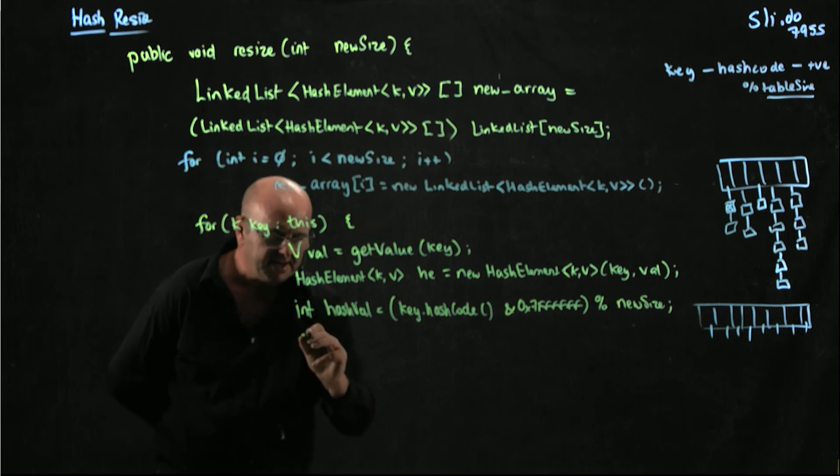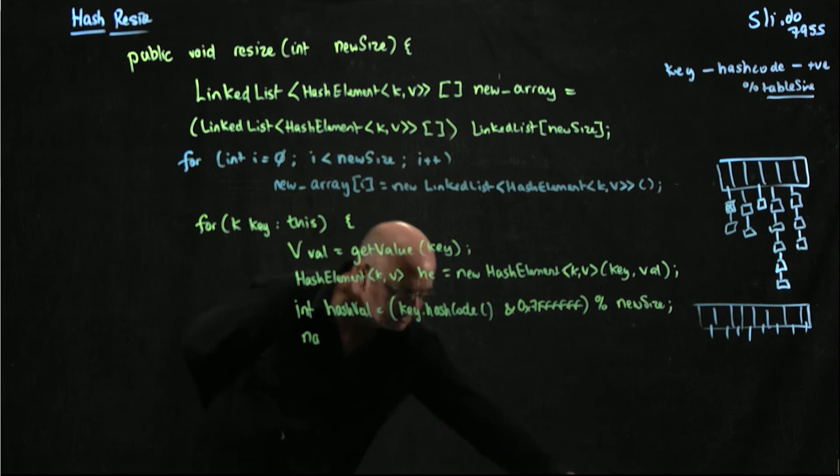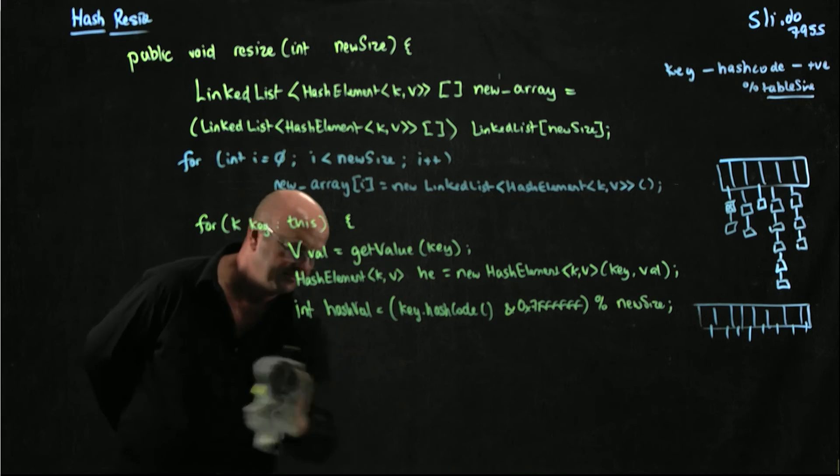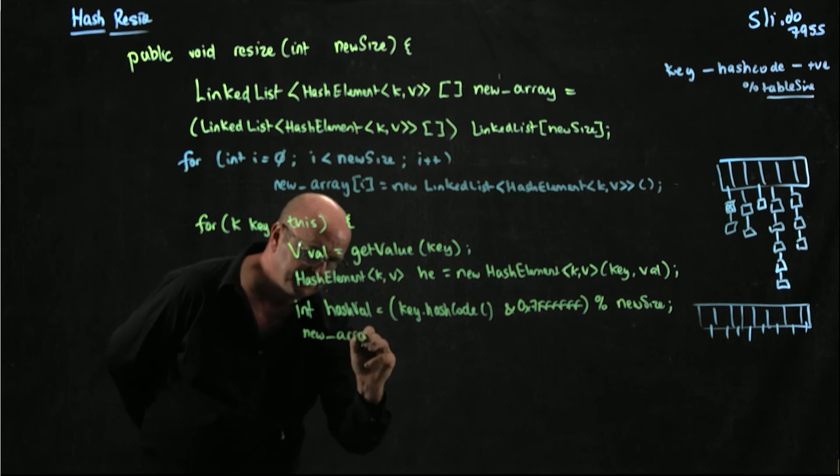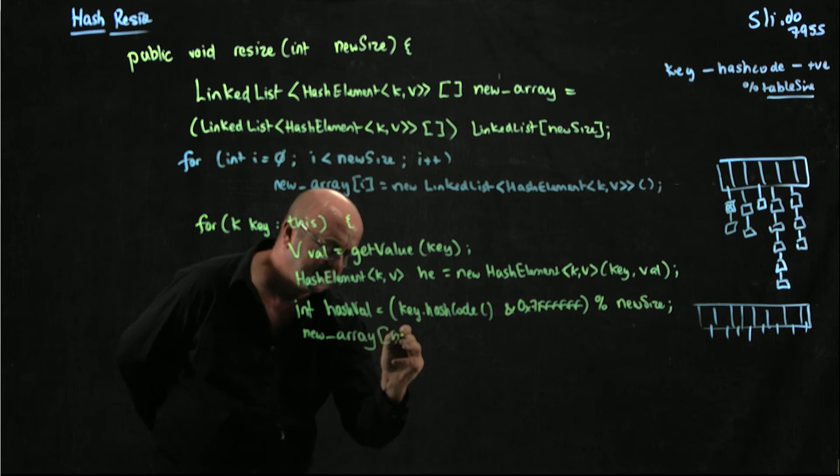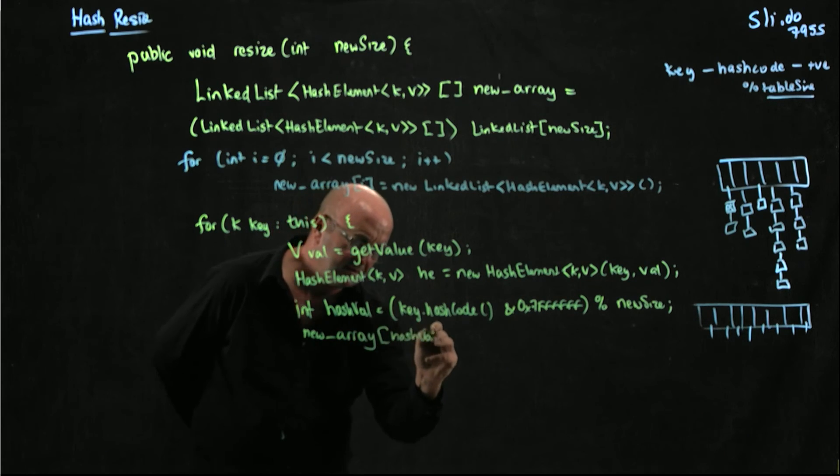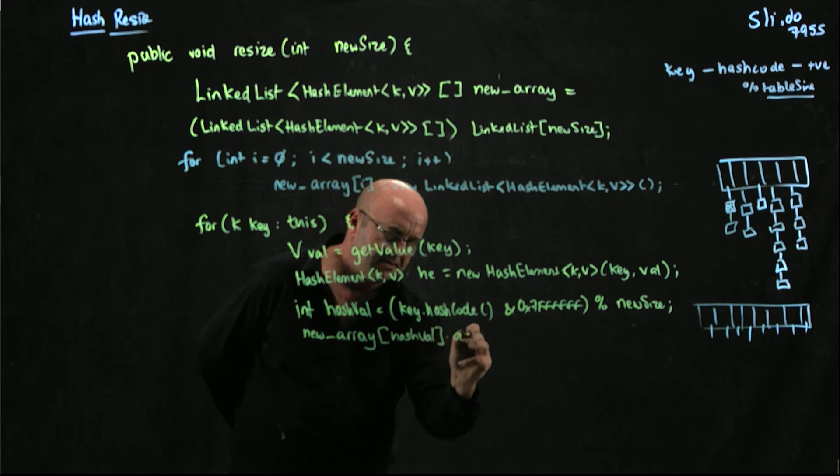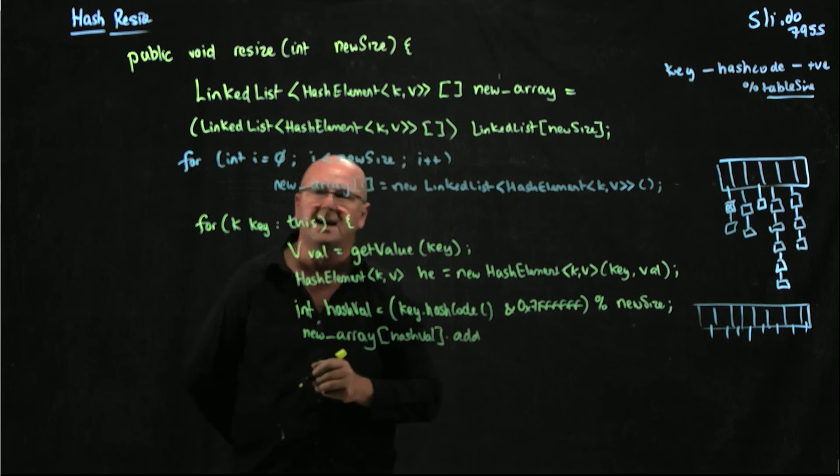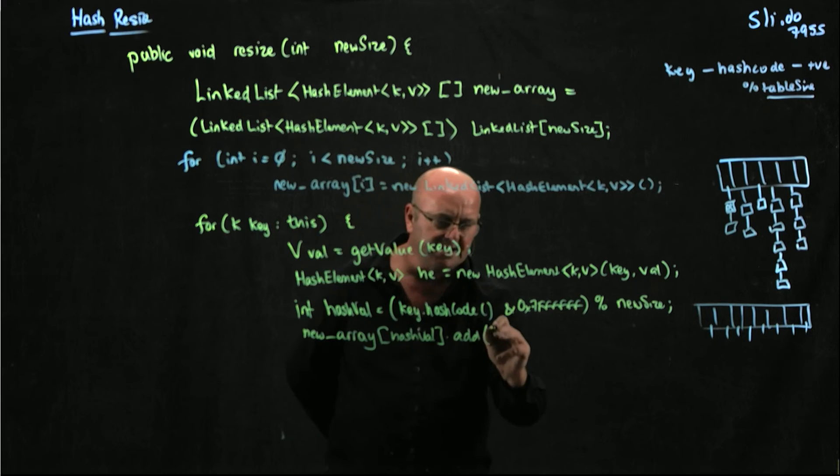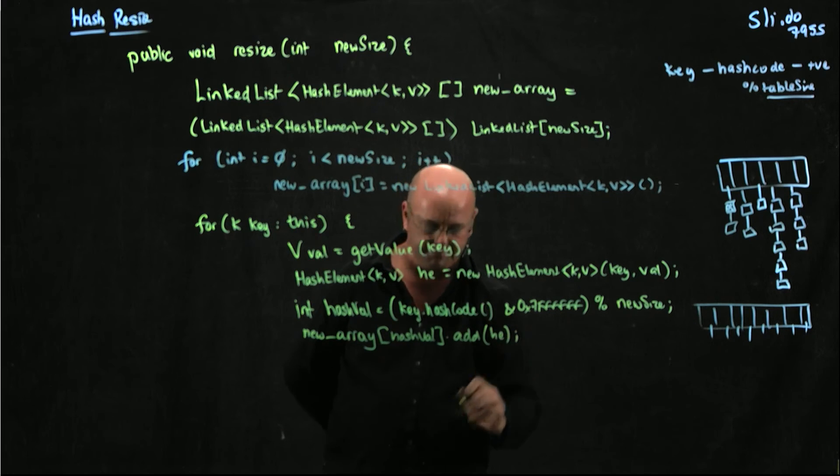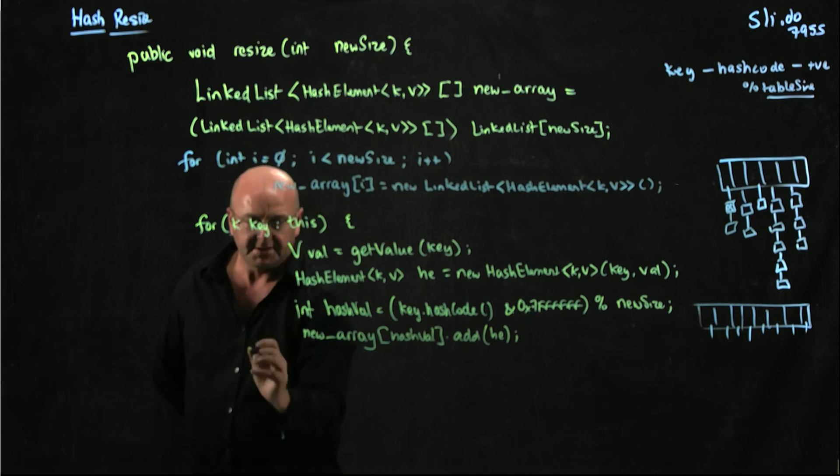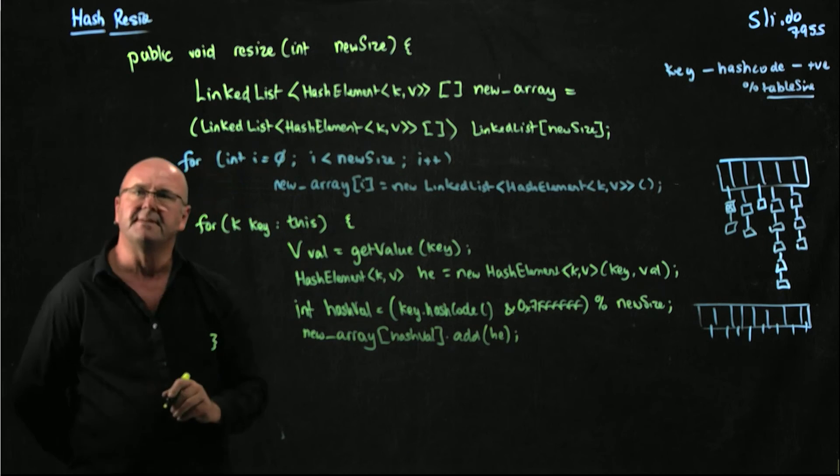Then we just say new array hashval, so we're calling the linked list add method, and we're going to add this hash element that we've just created right here. We just do that for all of the keys and all of the values.